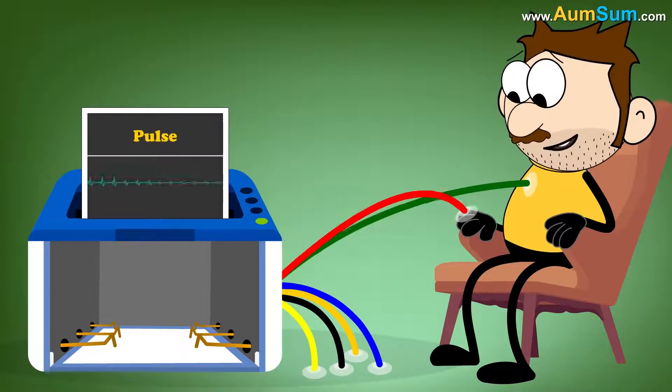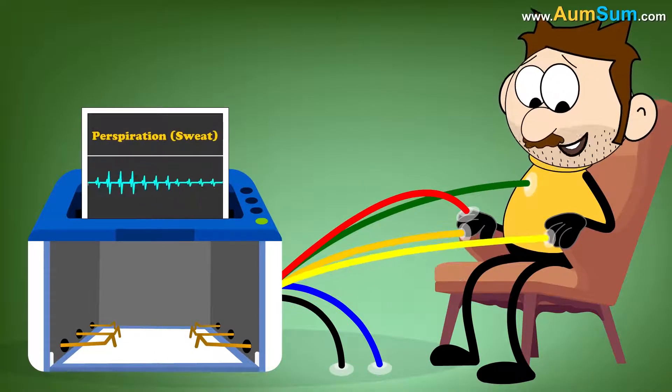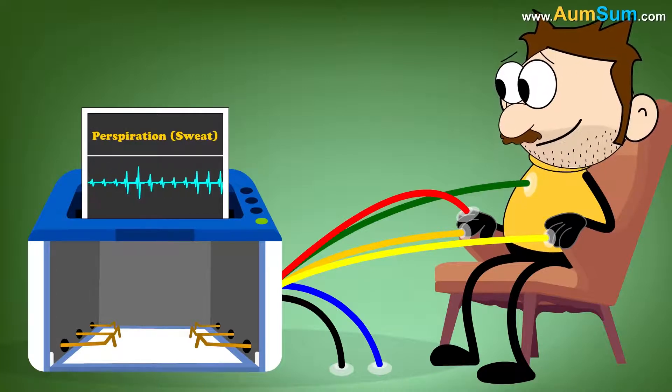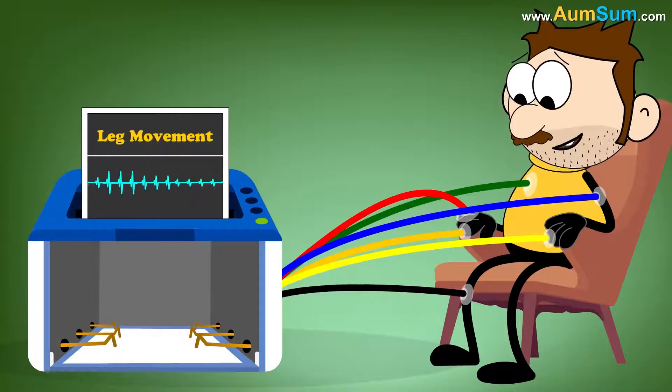These sensors usually record the person's breathing rate, pulse, blood pressure and perspiration as in sweat. Some polygraphs also record arm and leg movement of the person.